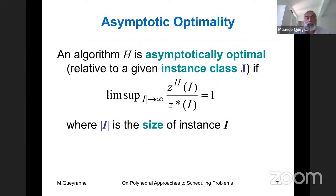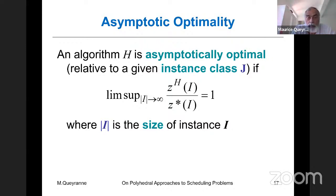However, this simple heuristic is asymptotically optimal. Asymptotic optimality means that for an instance class, if you define the size of an instance I, the limit supremum when the size grows of the ratio of the algorithm's objective value to the optimum Z* equals one — meaning in relative terms, the heuristic produces solutions arbitrarily close to optimum as the size grows sufficiently large. For these scheduling problems, we take the number of jobs as the size of an instance.